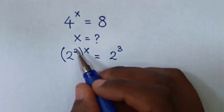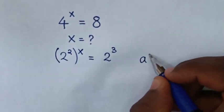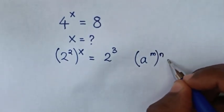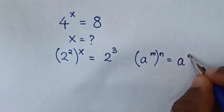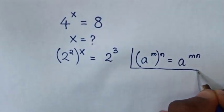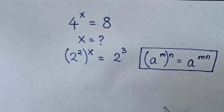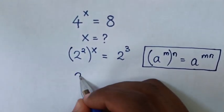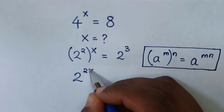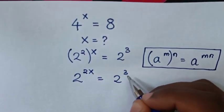In the next step, we will apply this exponential rule, which is: a power m, bracket power n, is equal to a power mn. Then in the equation, it will be 2 power 2x is equal to 2 power 3.